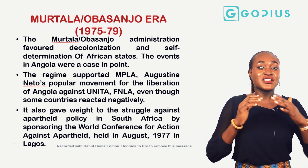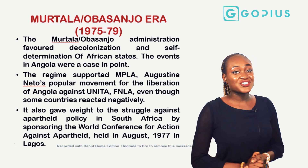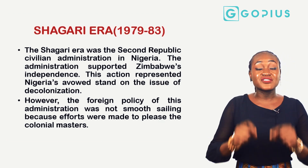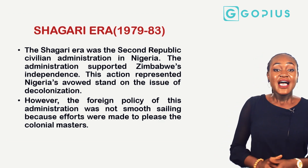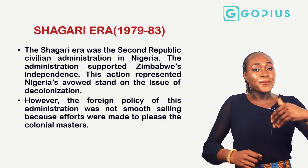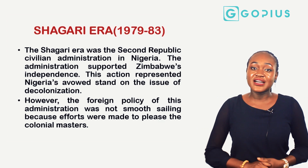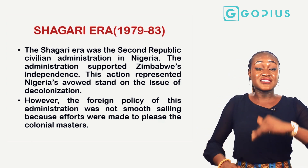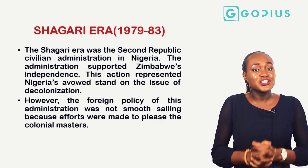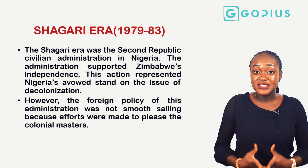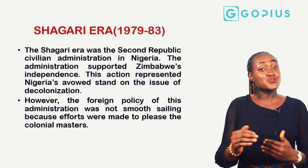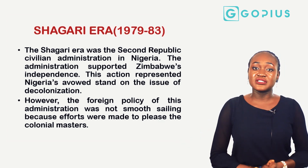The Shagari era from 1979 to 1983 was the second republic civilian administration in Nigeria. This administration supported Zimbabwe's independence, representing Nigeria's avowed stand on the issue of decolonization. However, the foreign policy of this administration was not smooth sailing, as there were efforts made to please the colonial masters, which was not encouraging.